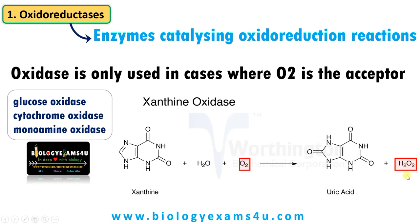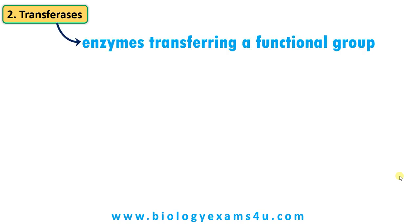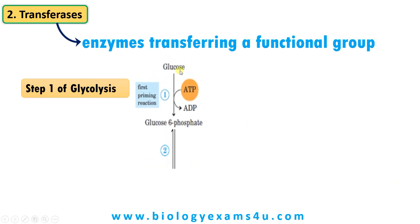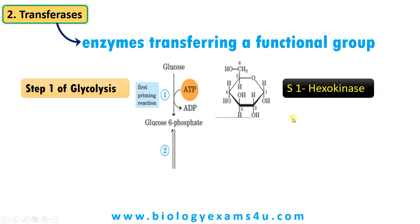Often hydrogen peroxide (H2O2) or water is formed in this reaction. The second class is transferases. As the term suggests, this enzyme is involved in transferring a functional group from one molecule to another. Let's take step one of glycolysis. Glucose becomes glucose 6-phosphate — a phosphate is added to the glucose molecule. This step is catalyzed by the enzyme hexokinase.